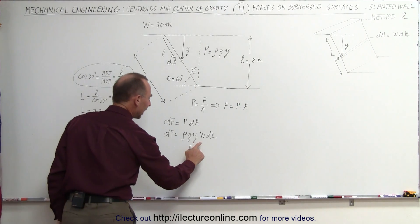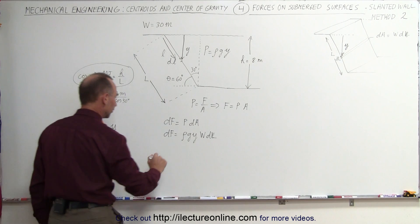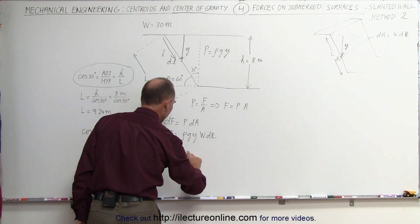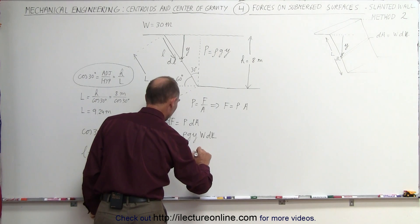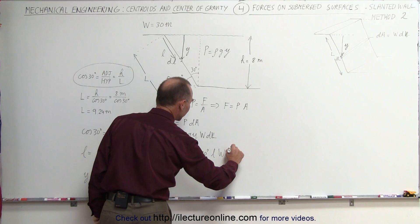So let's go ahead and plug that in for y here, so we can write y equals l times the cosine of 30 degrees, and df now becomes rho g, instead of y, we write the cosine of 30 degrees times l times w times dl.